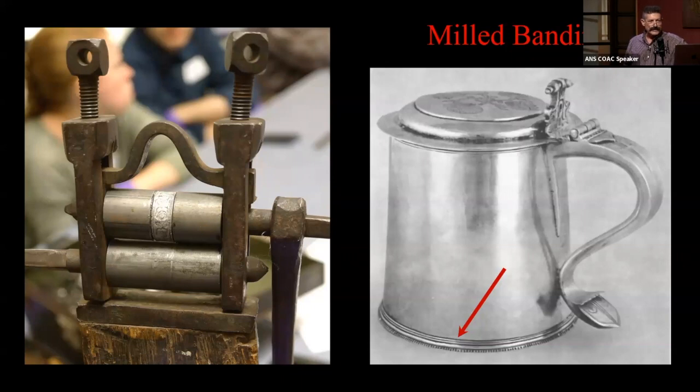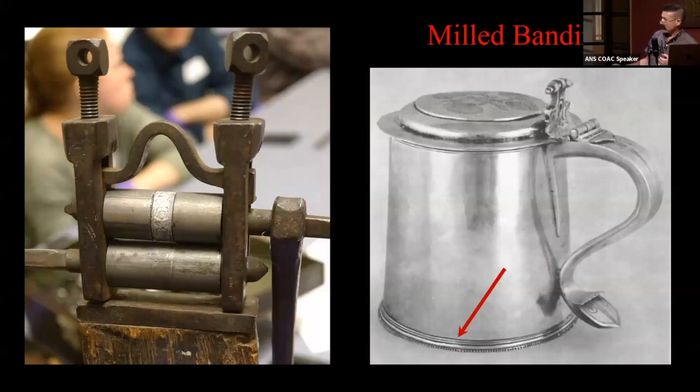We know that Hull and Sanderson got the commission to produce these coins because they were silversmiths. On screen at left is a typical silversmiths mill that produces what silver people would refer to as a milled banding. It's basically a strip of metal with a design struck or pressed into one side that becomes an ornamental border.